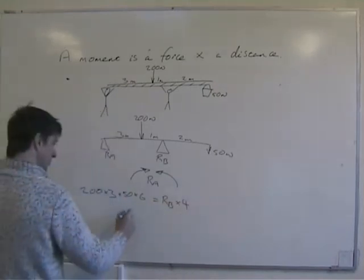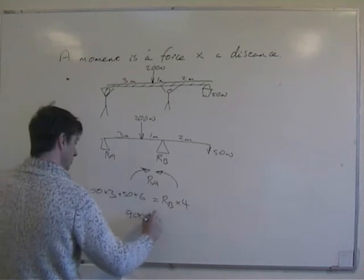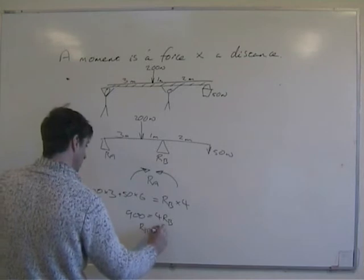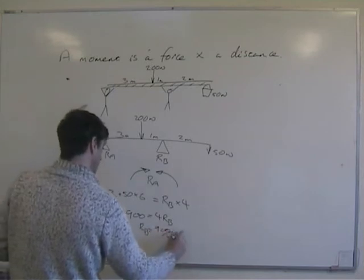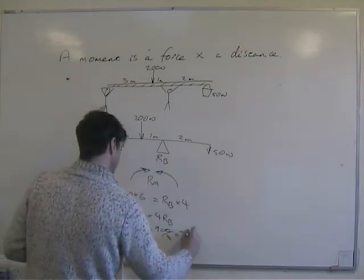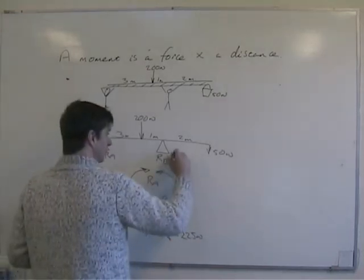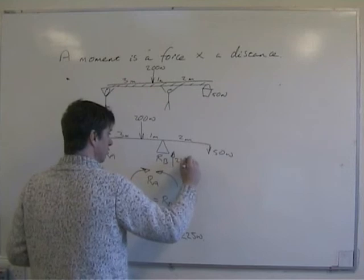So that's 900 equals 4RB, so RB equals 900 over 4, that's 225 units. So RB pushing up there is 225 units.